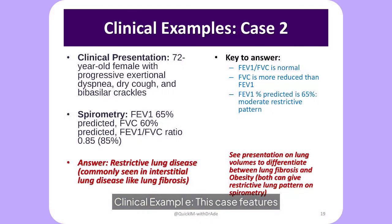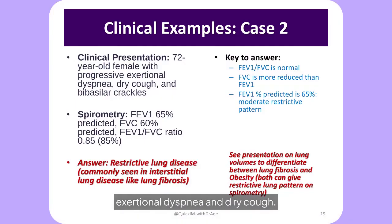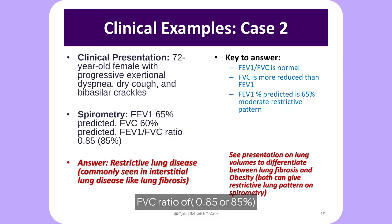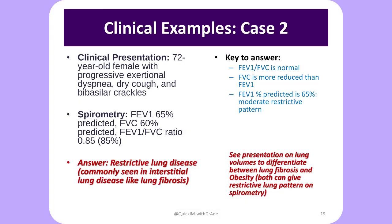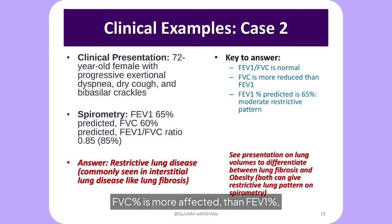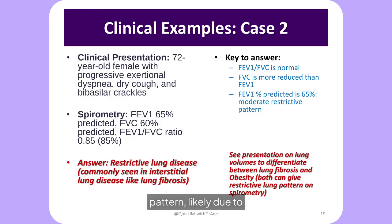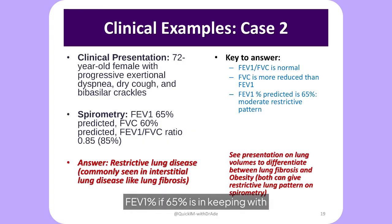Clinical example two: a 72-year-old woman with exertional dyspnea and dry cough. Spirometry shows a preserved FEV1/FVC ratio of 0.85 (85%), but both FEV1 and FVC are reduced below 80% predicted. FVC percent is more affected than FEV1 percent, consistent with a restrictive pattern, likely due to interstitial lung disease. FEV1 percent of 65% is in keeping with a moderate restrictive pattern.